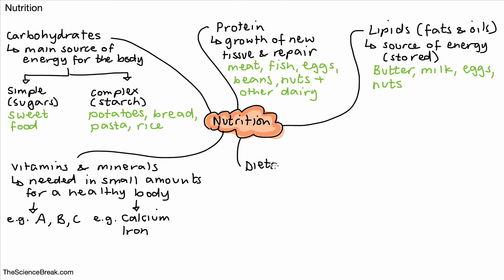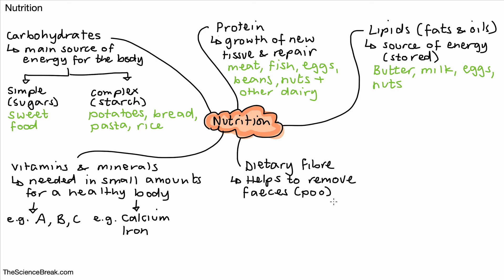The next nutrient is dietary fiber, sometimes just called fiber. This is important because it helps your body to remove feces — the scientific word for poo — more easily from the body when you have a diet with plenty of it. We can get dietary fiber from any plant-based food, so fruit and vegetables are a very good source of dietary fiber.